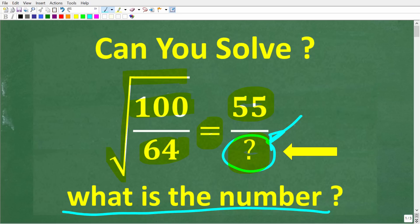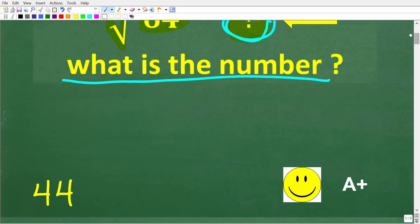Then, of course, I'm going to solve this problem step by step. So one more time, we have the square root of 100 over 64, and this is equal to 55 over some number. Alright, so let's go ahead and take a look at the solution. The correct answer here is 44.